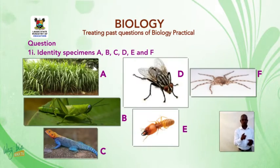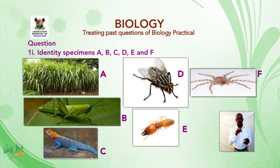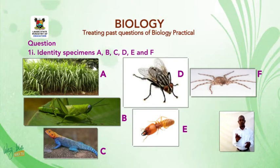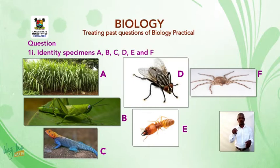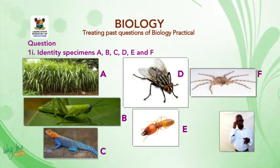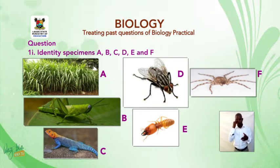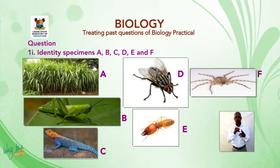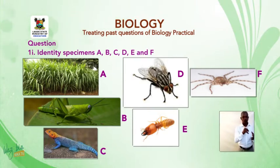Question number 1, Roman numeral 1: identify specimens A, B, C, D, E, and F. When you are asked to identify a specimen, you are asked to name it. Sometimes they can ask you to identify with reason or without reason. If asked to identify with reason, you have to give the reason why you name them those names.